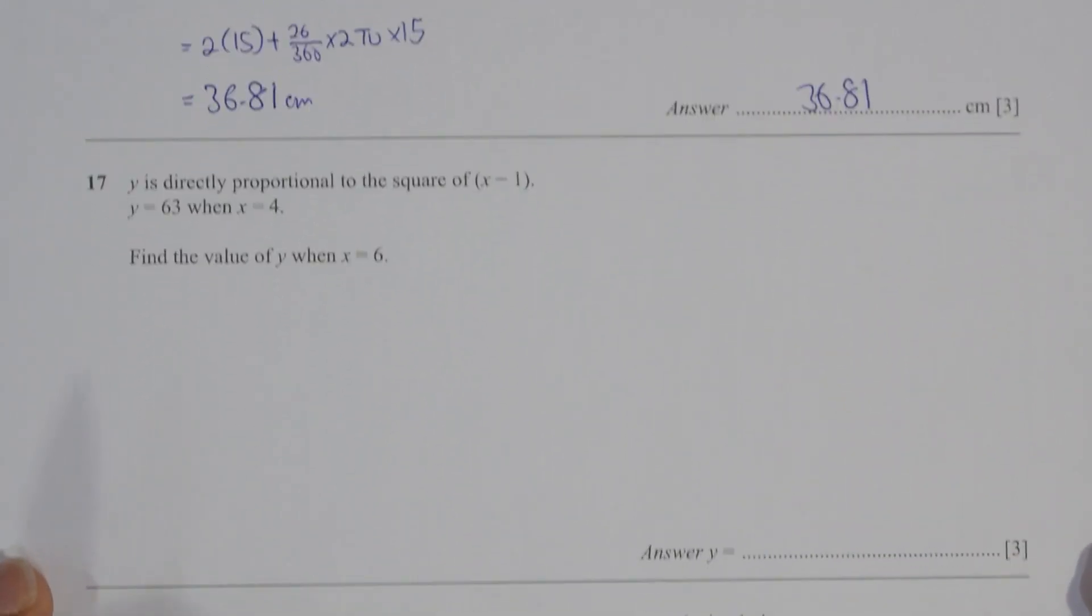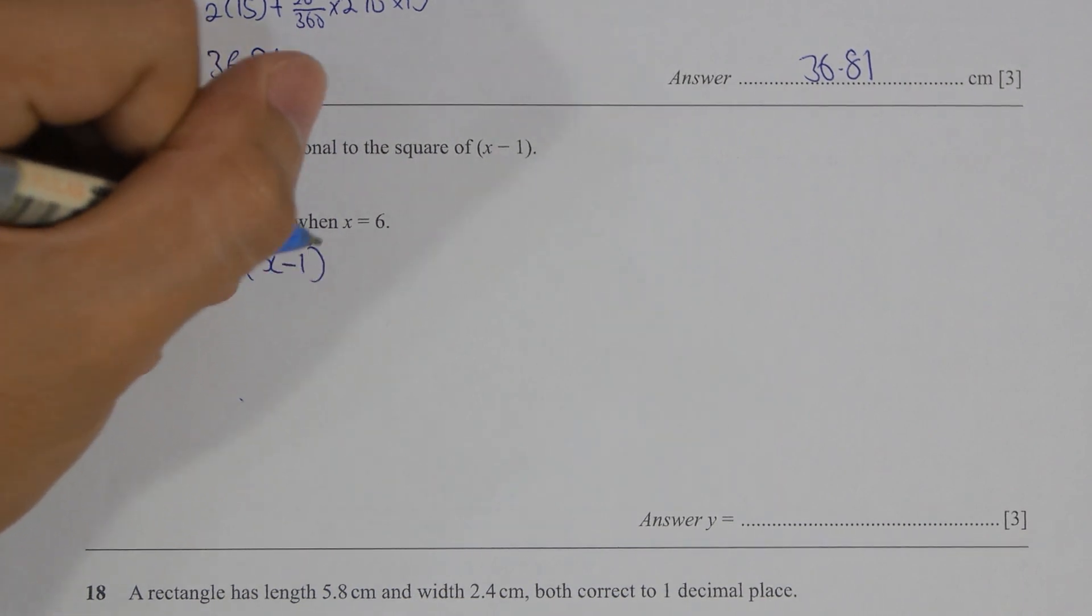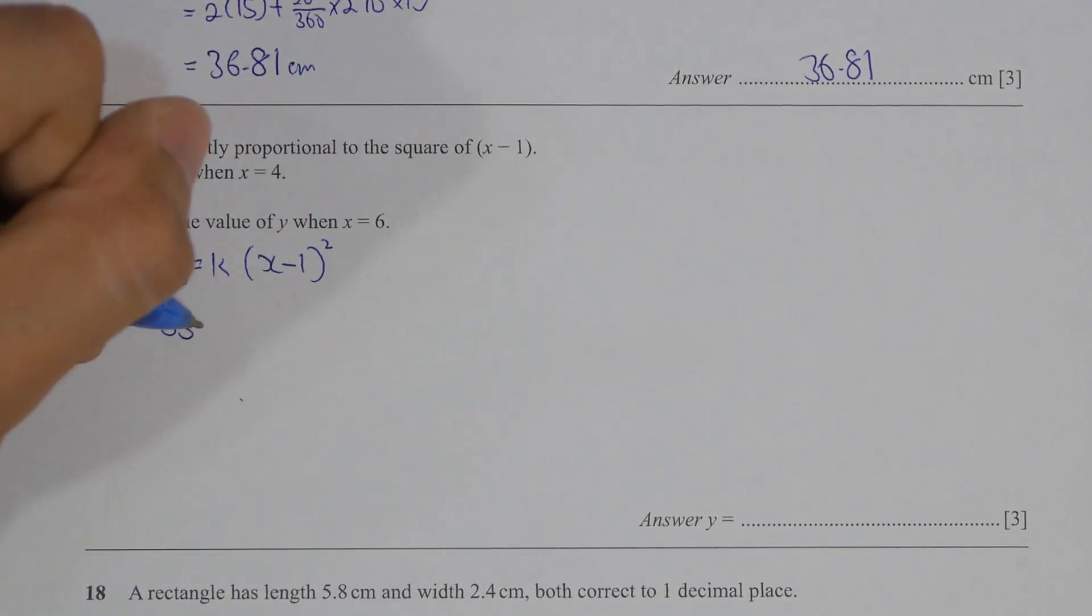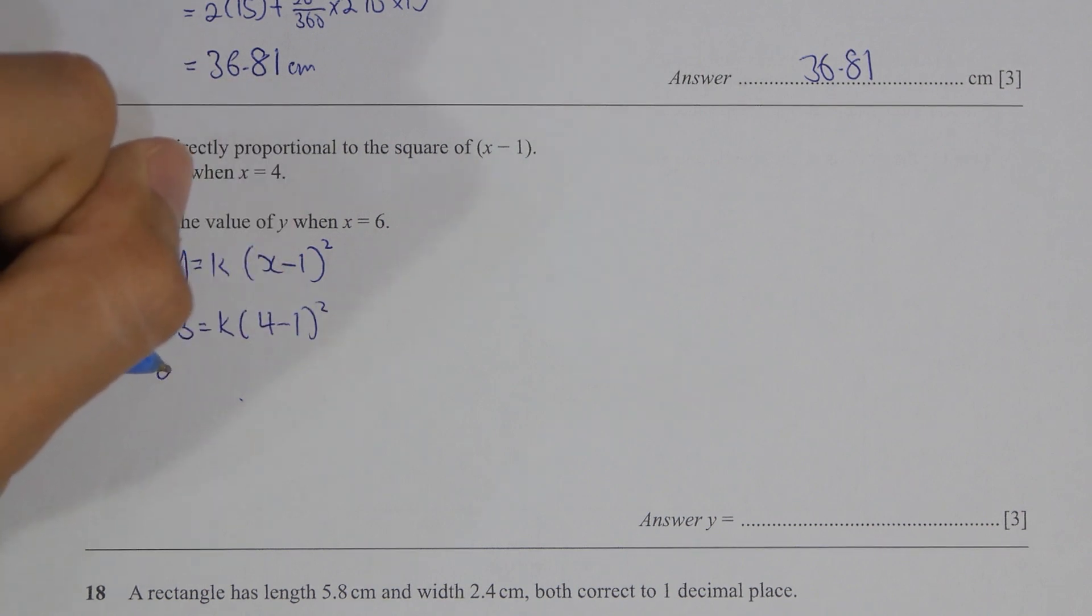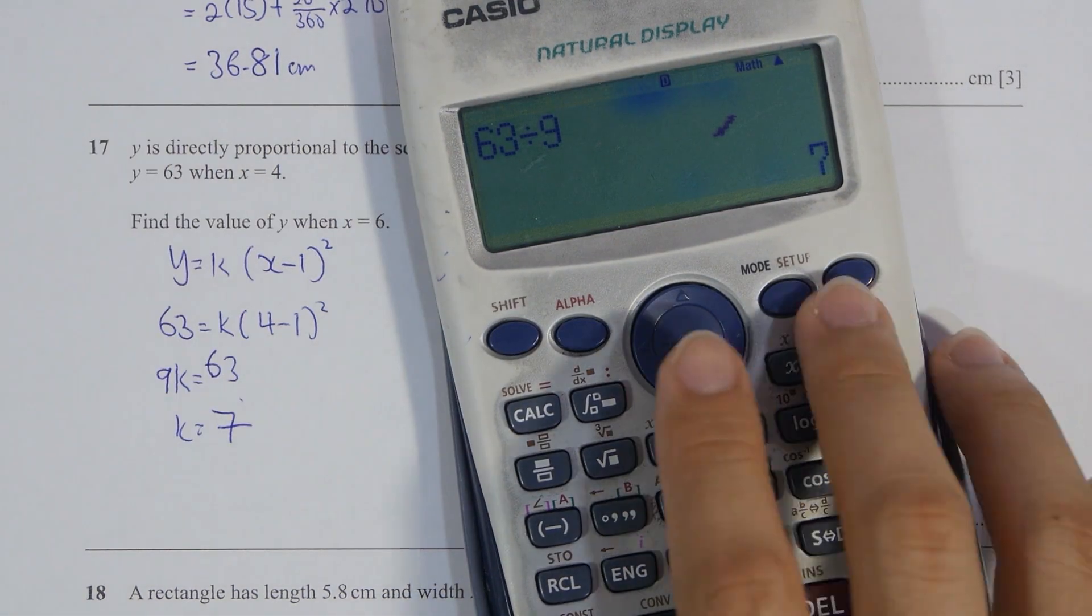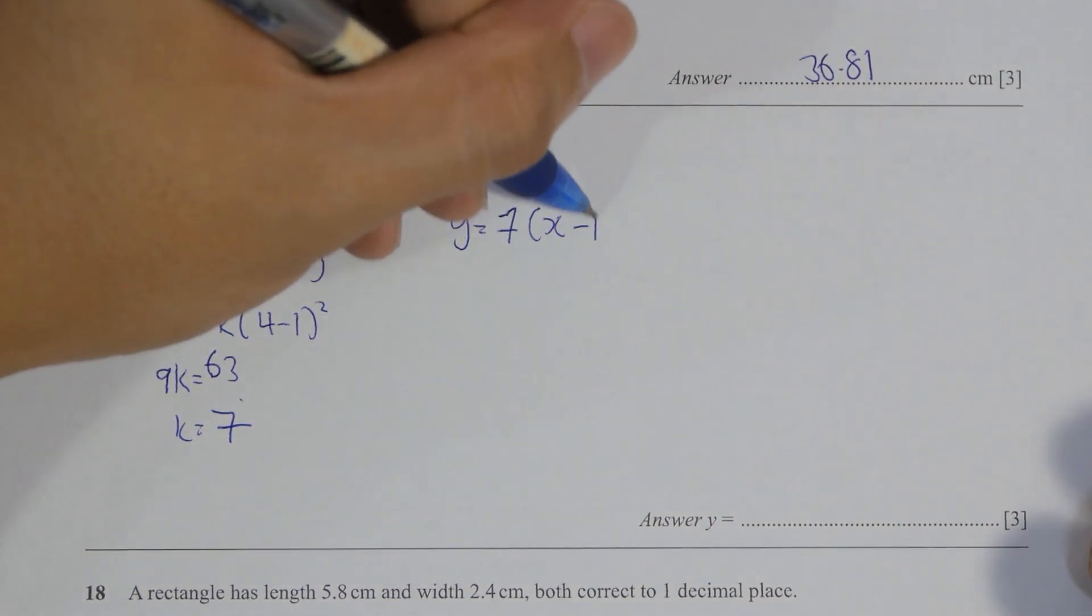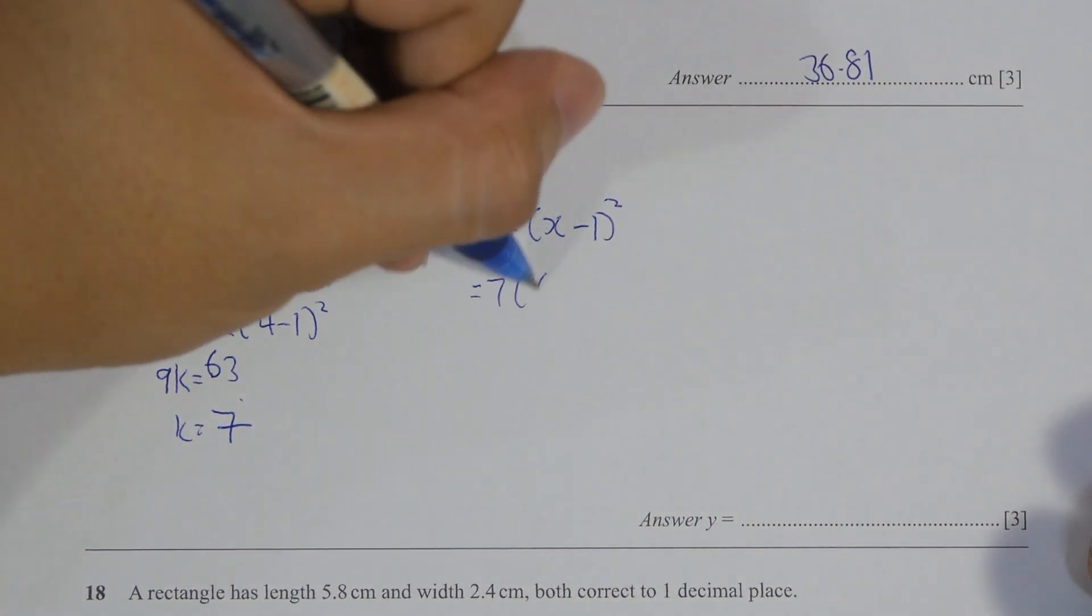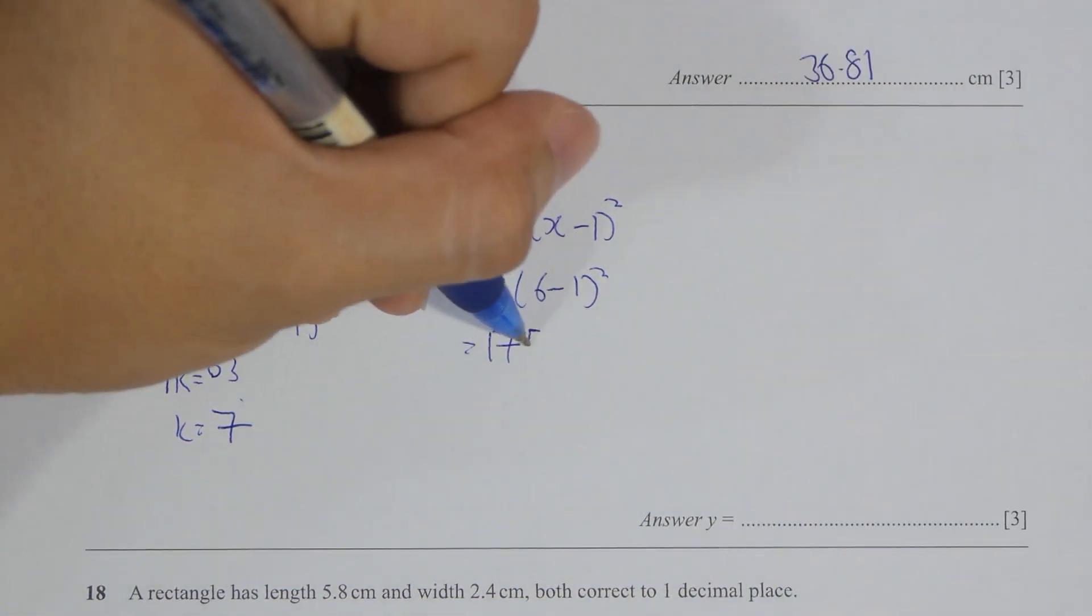Question 17, directly proportional. So y equals k bracket x minus 1 squared. Substitute the value in to identify k's value, and after the calculation, you get k as 7. So y equals 7 bracket x minus 1 squared. Substitute 6 into it, then you get y's value as 175.